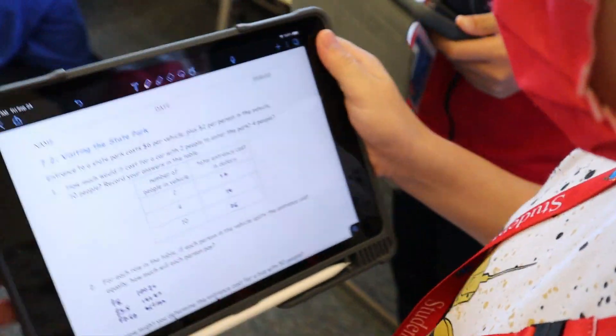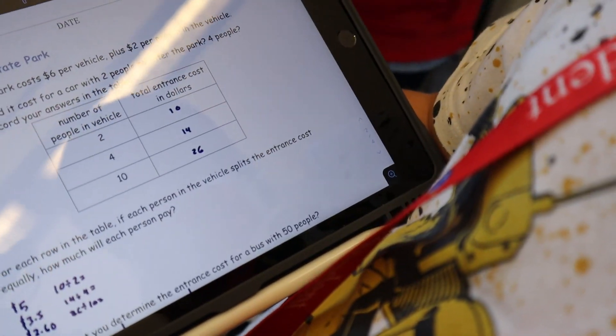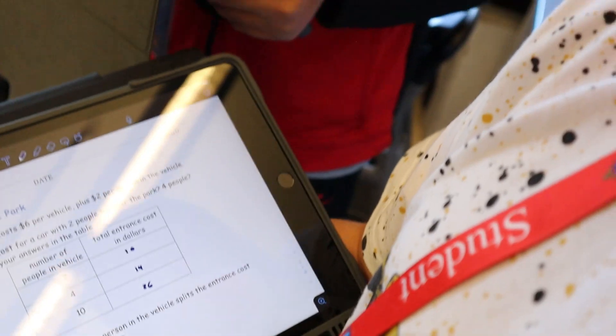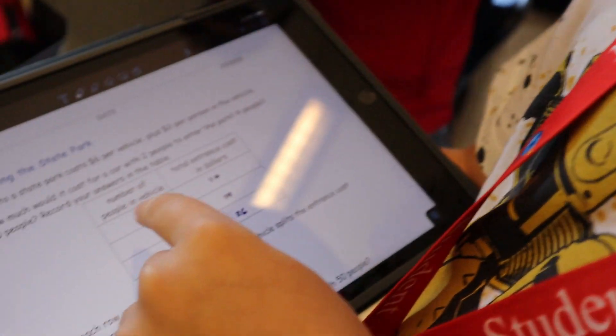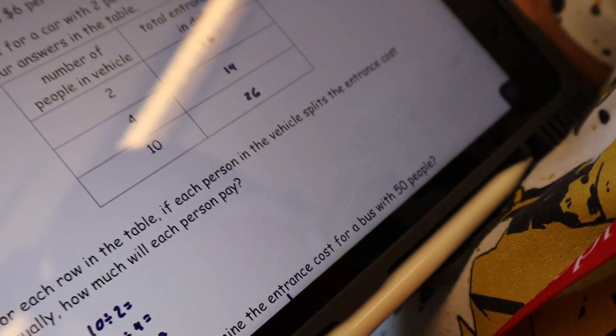So I was doing every car has $6, but... What's the $6 fee? The $6 fee is per vehicle. Per vehicle. And each person has to pay $2, so 2 times 4 plus 6 is what I was thinking.